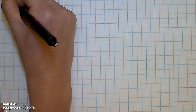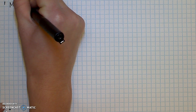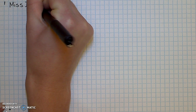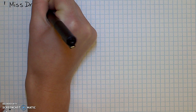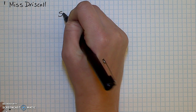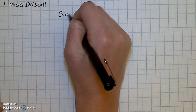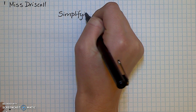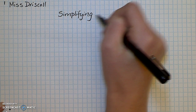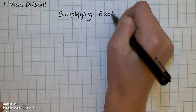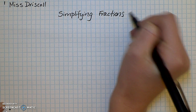I'm going to write Ms. Driscoll since I'm the person doing the paper — you're going to write your name. And as our title in the middle, you can write simplifying fractions. All right, so let's get started.